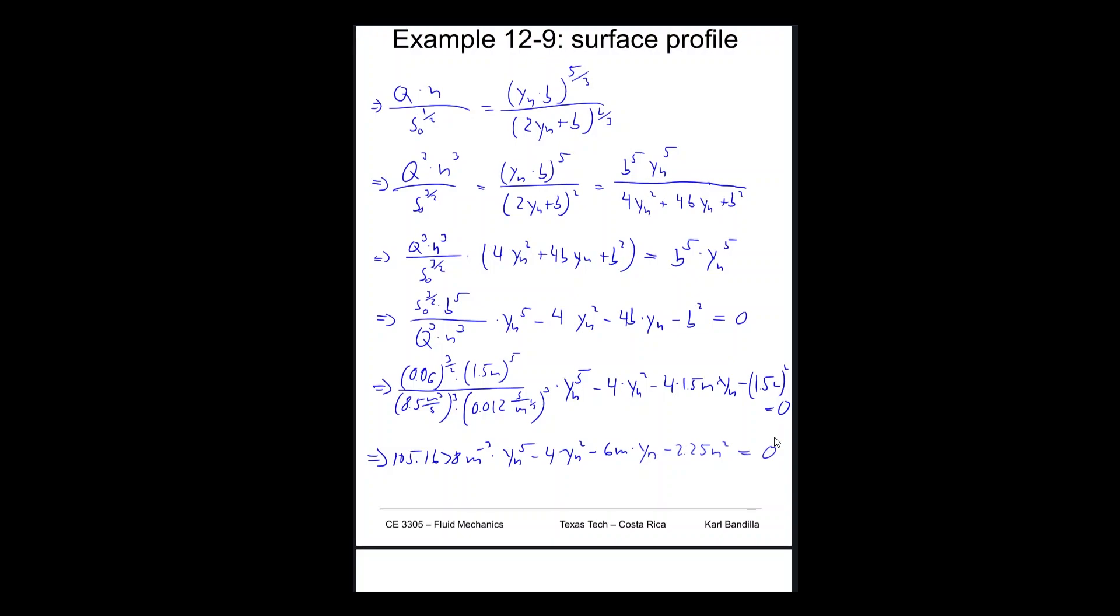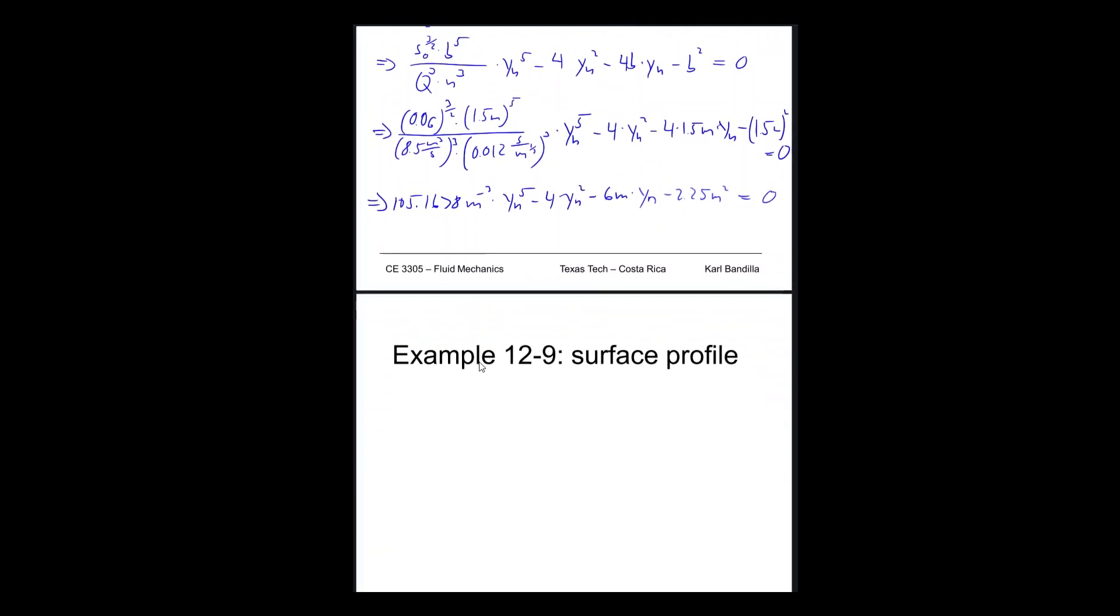So let's plug in numbers. So we get 105.1678 meters to the minus 3 times yn to the 5th minus 4 times yn squared minus 6 meters times yn and then minus 2.25 meters squared. And all of that equal to zero. Now if we plug that in and solve it, then again we'll get five different values. There's only one that's realistic in all those. And so we can say yn is equal to 0.583487 meters.